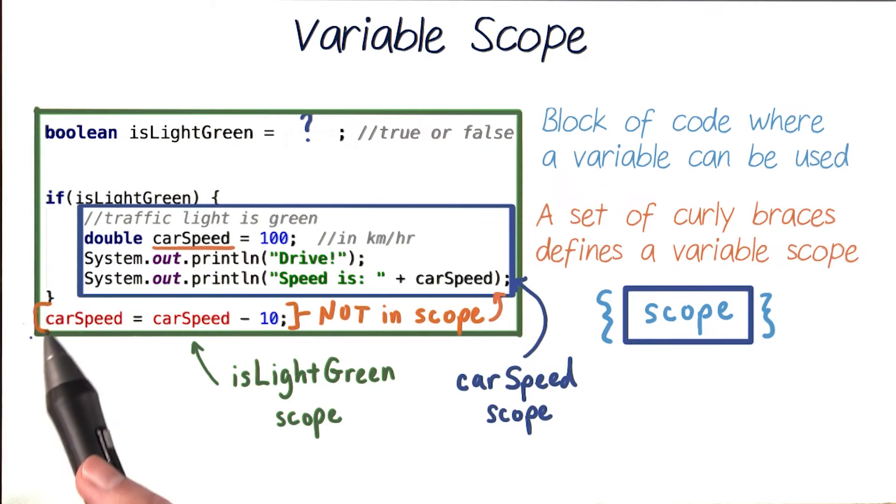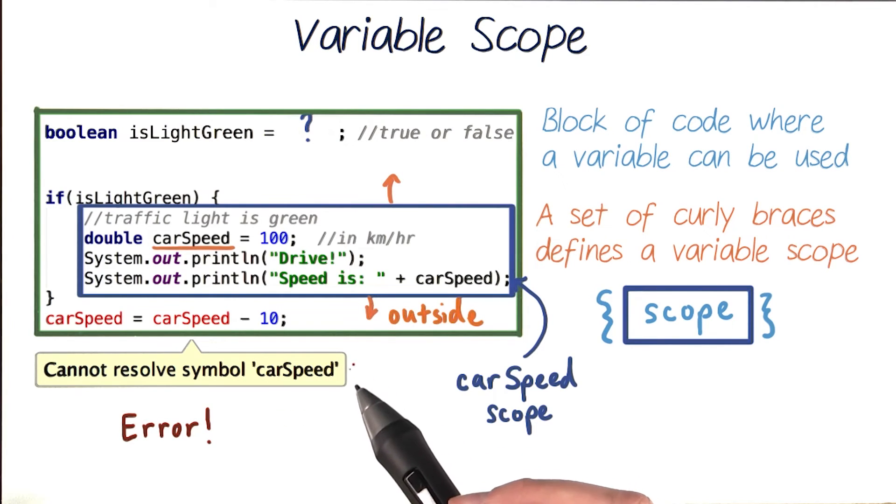For example, if after the last curly brace of our if statement we try to reduce our CarSpeed by 10, this will actually cause your computer to generate an error message that looks something like this: 'Cannot resolve symbol CarSpeed.'